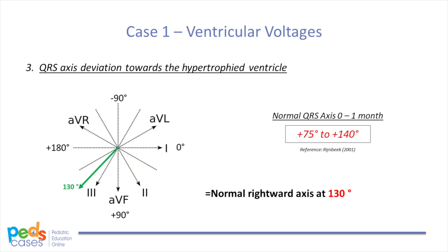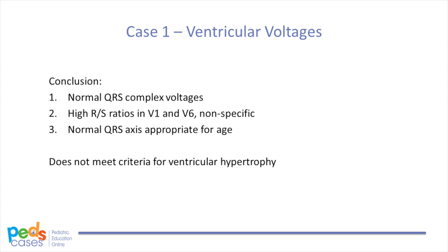Finally, we look for QRS axis deviation towards the hypertrophied ventricle. We already measured the QRS axis at plus 130 degrees, which was normal for our patient's age. If we suspected ventricular hypertrophy based on voltages or R-to-S wave ratios, we would expect an axis corresponding to that ventricle. To conclude our findings, our patient has normal QRS complex voltages, slightly high but nonspecific R-to-S wave ratios, and a QRS axis appropriate for his age. Although the R-to-S wave ratios are slightly abnormal, he does not meet criteria for ventricular hypertrophy.